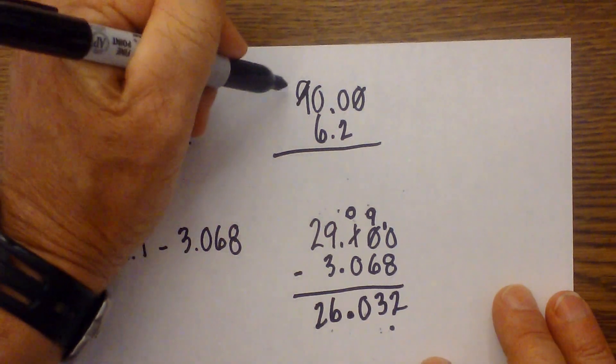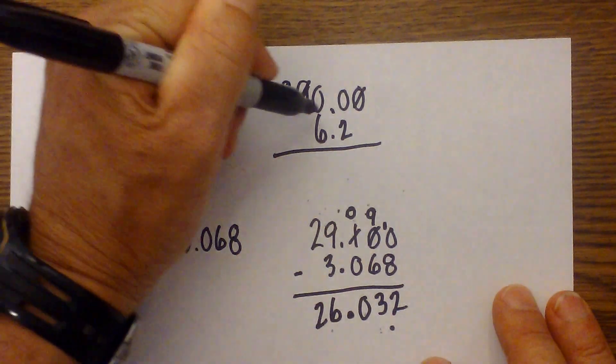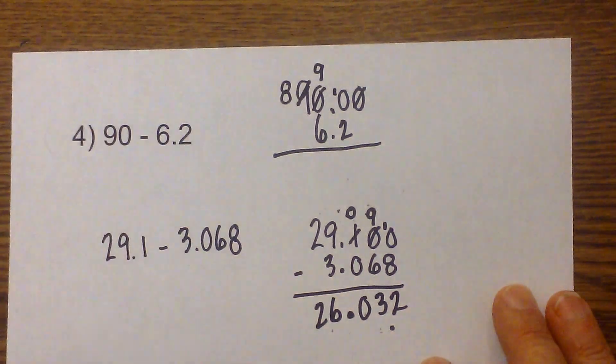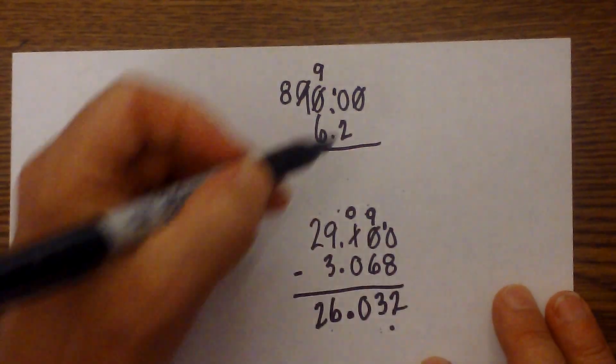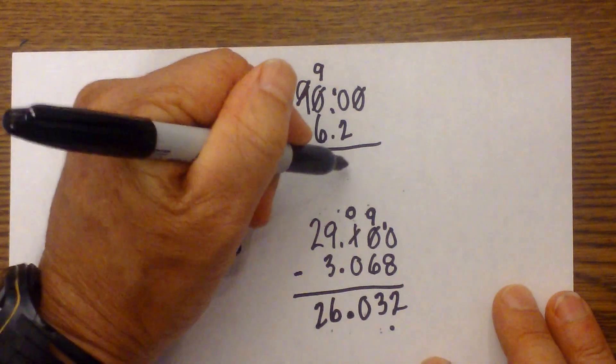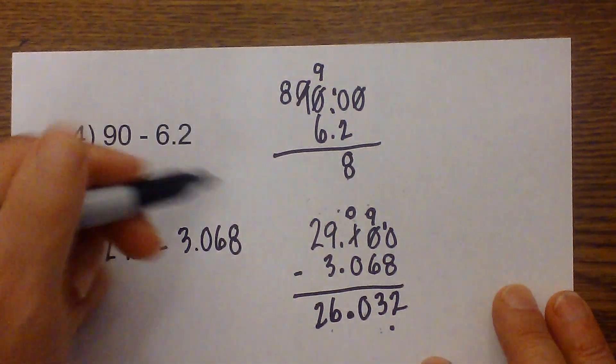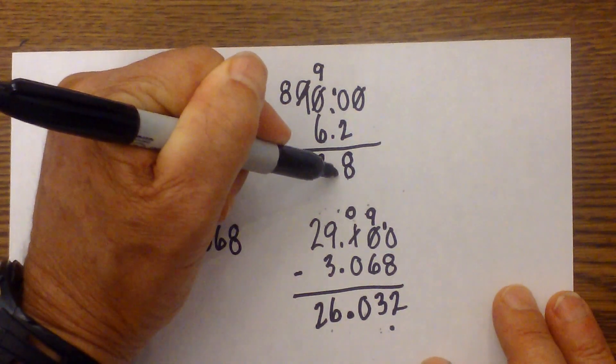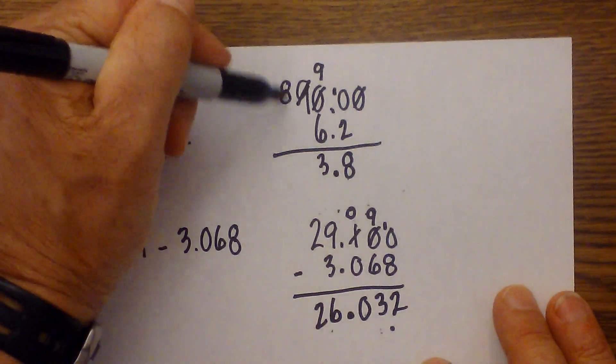Zero needs to borrow from this zero, which can't do that. So this is going to become an eight, this zero will become a nine, and this will become a ten. Ten minus two is eight, nine minus six is three, bring down the decimal, and then this is eight, so that becomes 83.8.